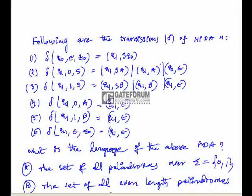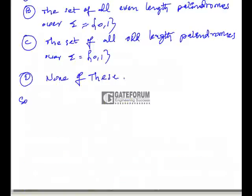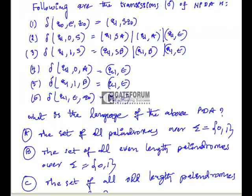The following are the transitions of an NPDA. Delta of q0, epsilon, z0 is (q1, s, z0). Delta of q1, 0, s is (q1, sa). Delta of q1, epsilon, q1. Delta of q1, 1, s is (q1, sb). Delta of q1, 1, b is (q1, epsilon). Delta of q1, 0, a is (q1, epsilon). Delta of q1, 1, b is (q1, epsilon). Delta of q1, epsilon, z0 is (q1, epsilon), and finally q1, epsilon, z0 goes to qf, epsilon.